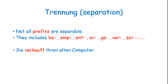There are certain prefixes that are not separable. They include: be, emp, ent, er, ge, ver, zer. For example, 'er verkauft ihr alten Computer' — here we do not separate the prefix at the end. We just conjugate with the verb only.